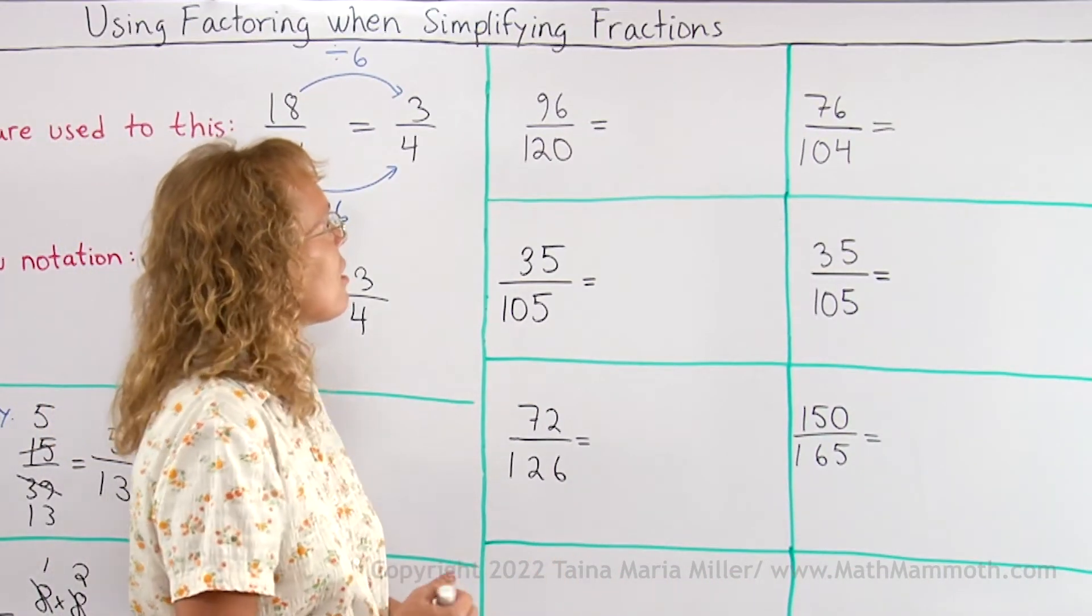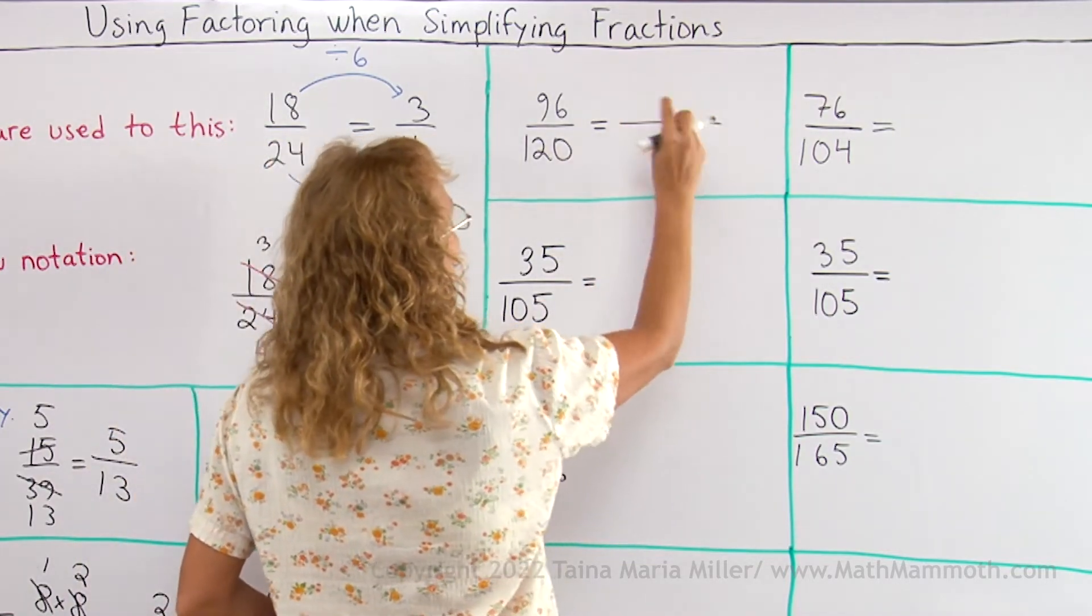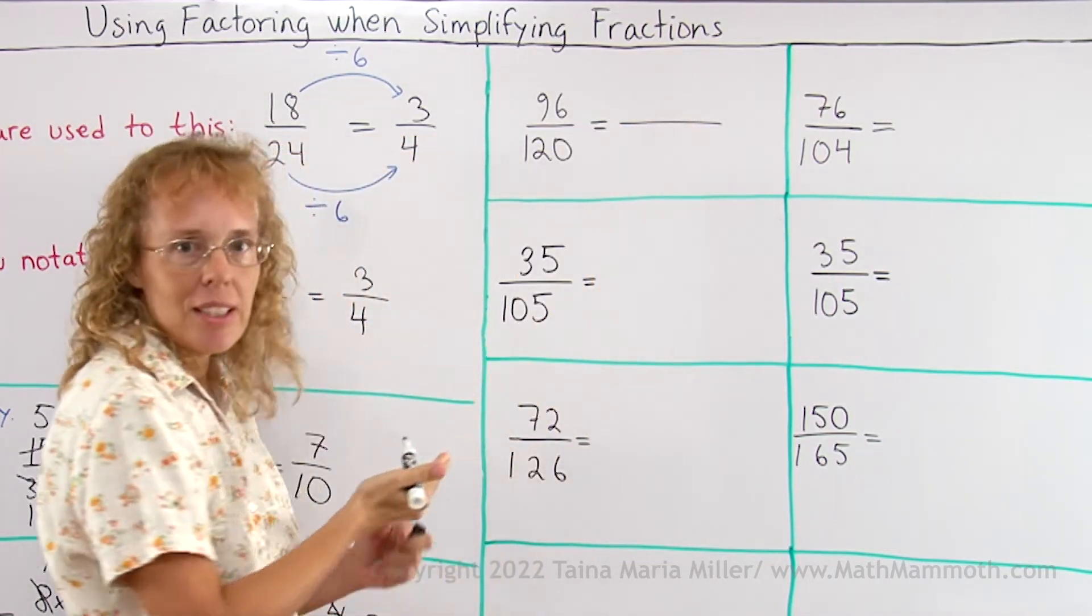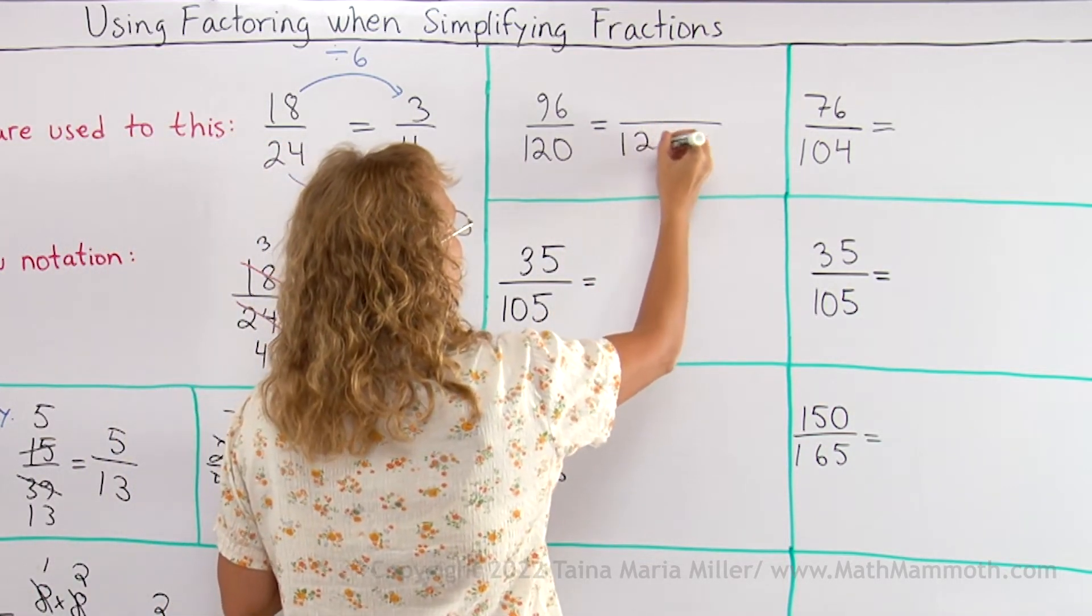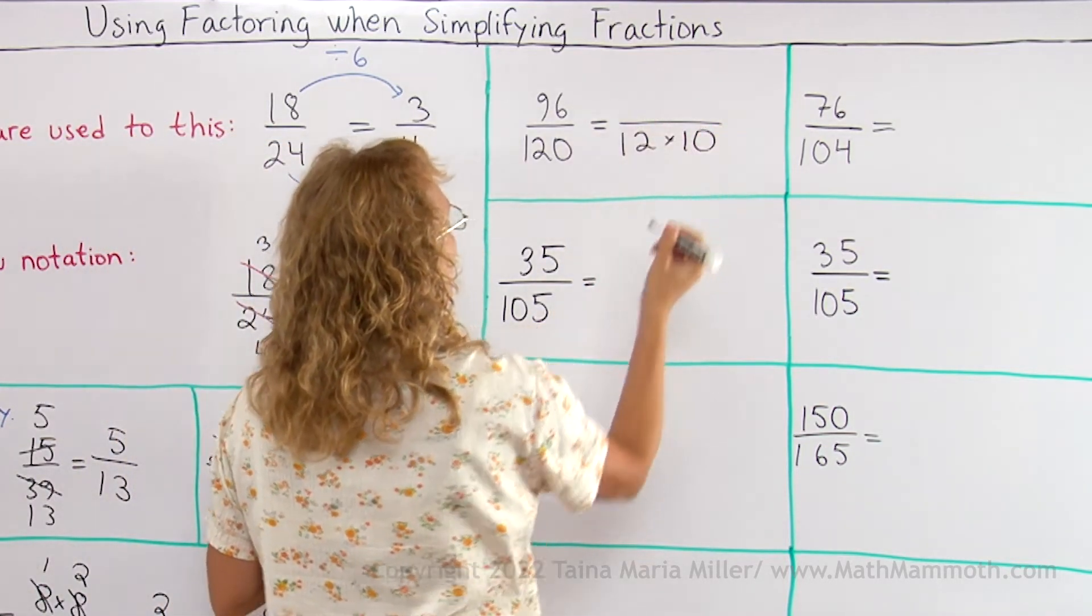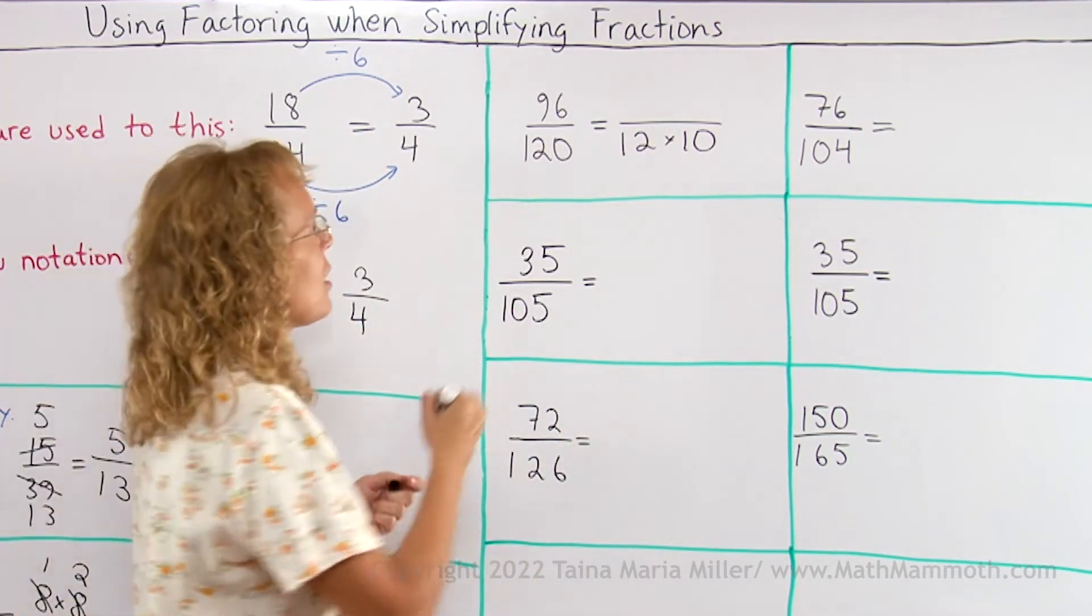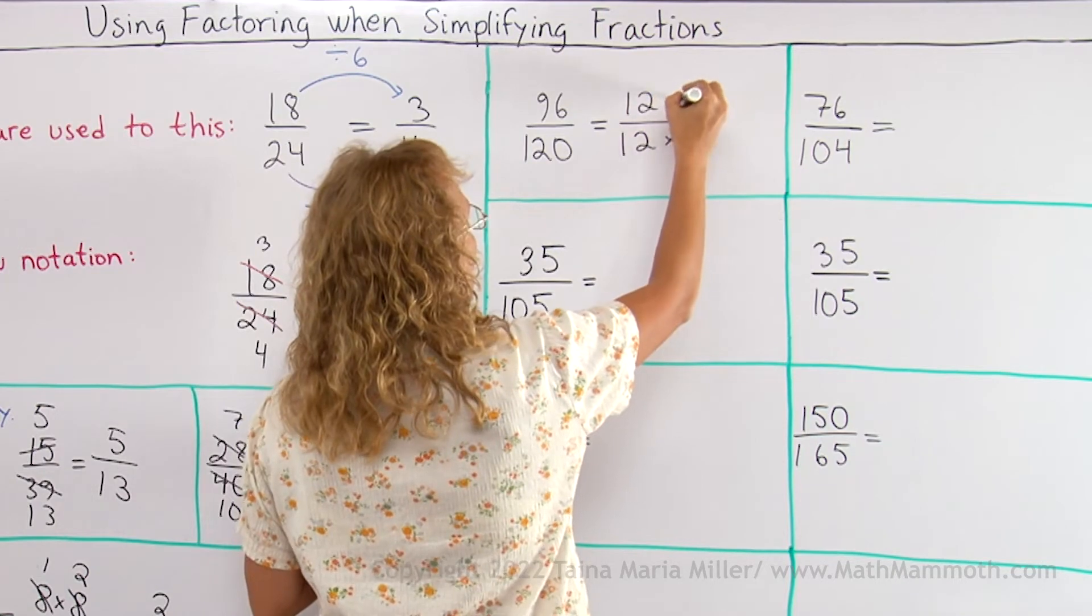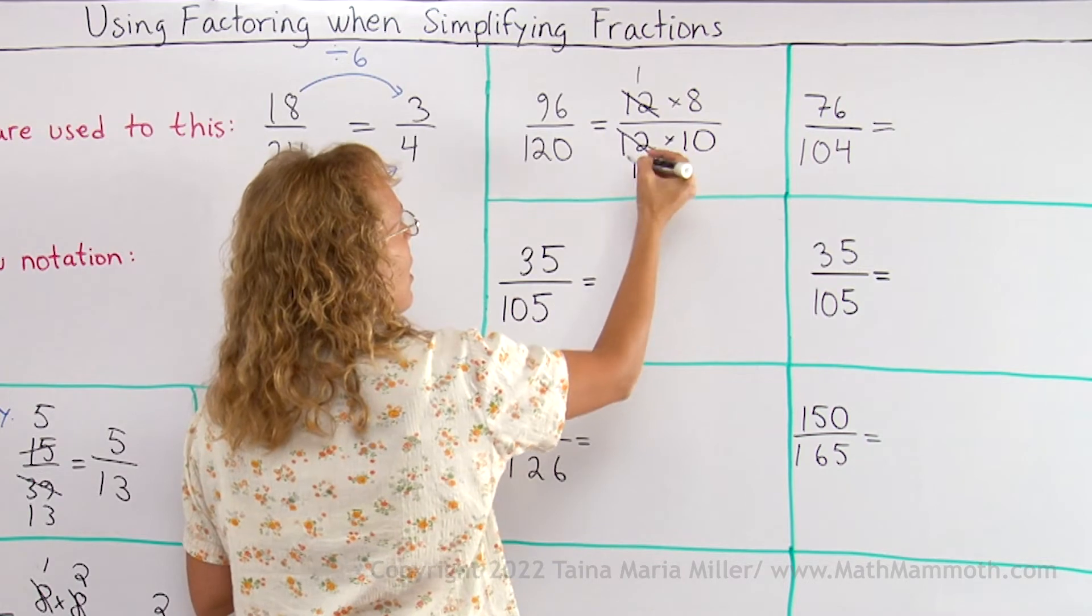96 over 120. If I'm using factoring, I will first write both of these numbers as something times something. 120 would be 12 times 10 maybe. And 96 is 12 times something too, isn't it? It's 12 times 8. So that makes it handy. I can just cross out my 12s leaving 1 and 1.